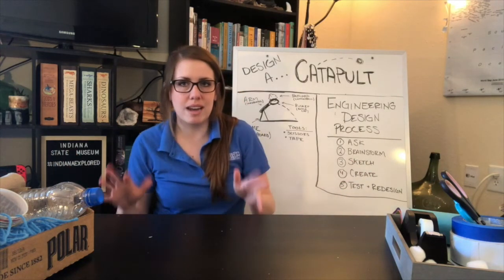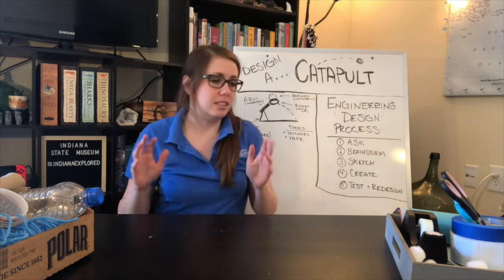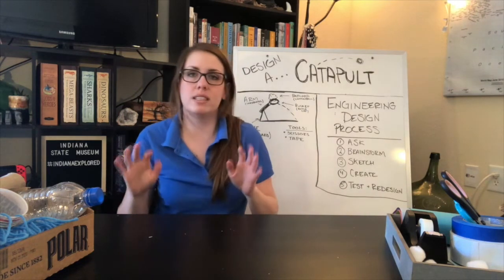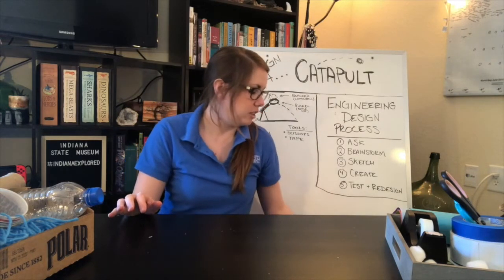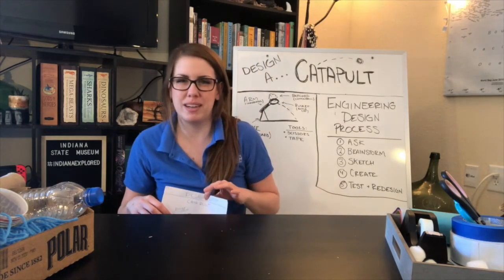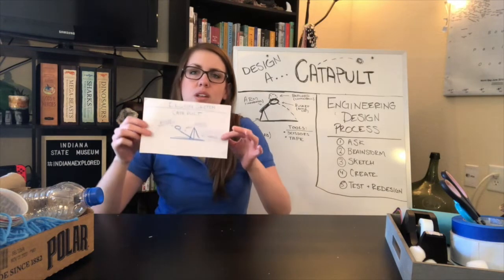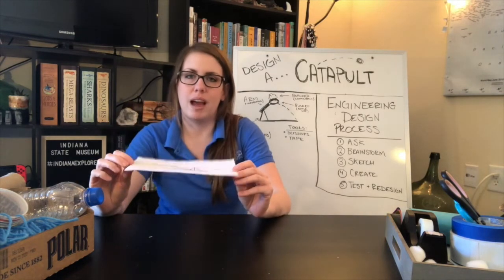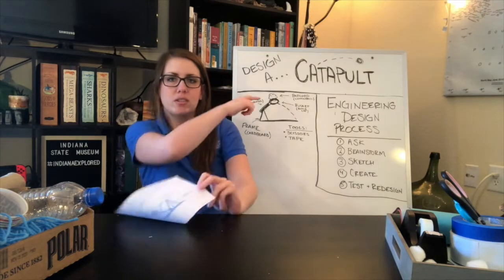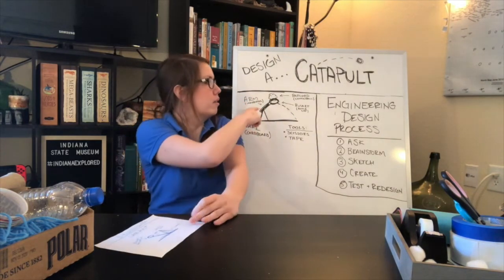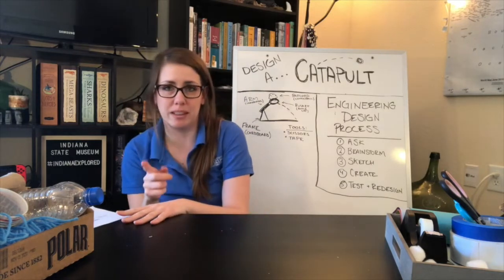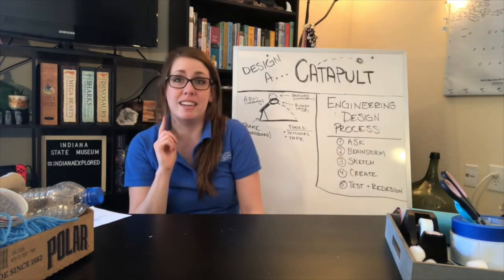So now our next step after that is to sketch our design. Now this is one of the most important steps along the way. And so what you want to do is you want to take maybe two or three minutes and you want to draw out your design. Now I've done this on this little piece of paper here. I've also done it up on my board right behind me here. And I went through and I made sure that my sketch was labeled because a labeled design is a good design.